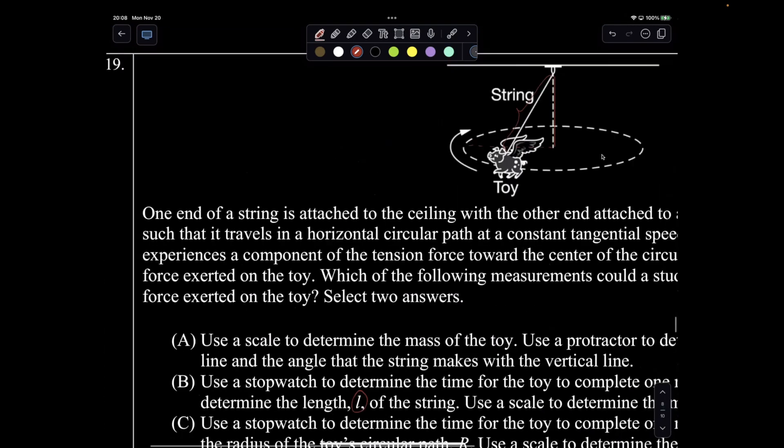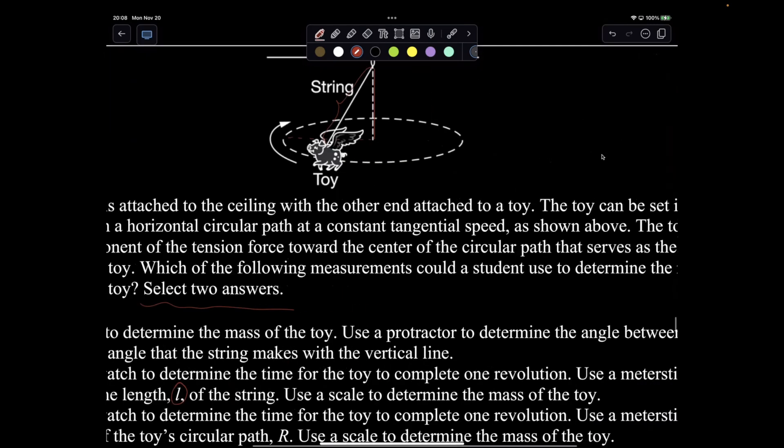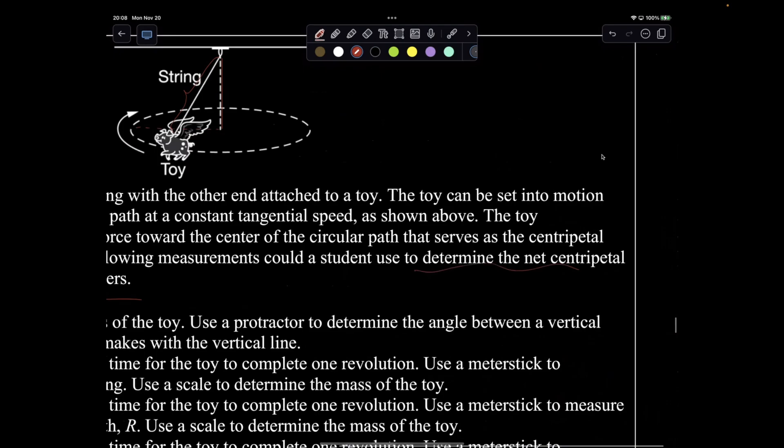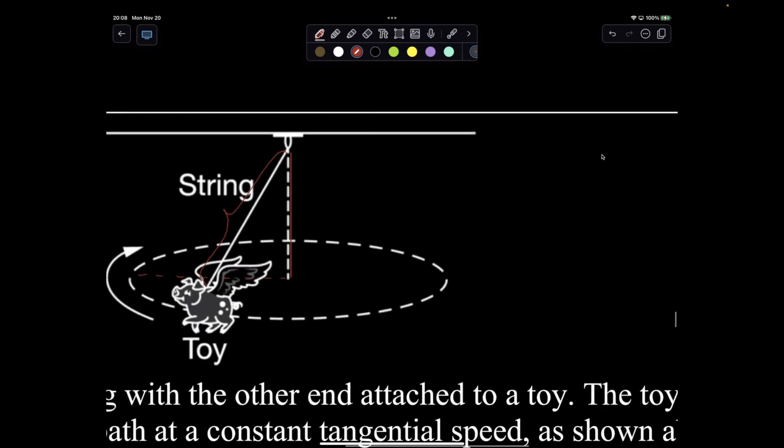So ultimately select two answers, which of the following measurements could the student use to determine the net centripetal force exerted on the toy? If I think of the forces that act on my piglet at this position, I will have the mg, the tension that would be vertically balancing my mg, and then horizontally giving me the centripetal force. So my net force is just centripetal force.